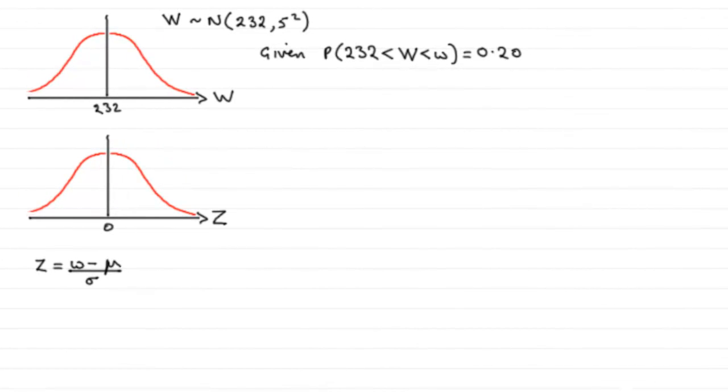Now for this part, this is a very good example of how we calculate observed values. We do what is often called the inverse method. Let me show you how it works for this question. We're given that the probability that the weight W lies between 232 and this observed value w equals 0.20, and we've